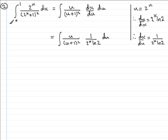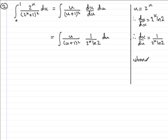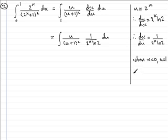Now we return to changing the limits. These limits 0 and 1 are with respect to x. When x equals 0, u equals 2 to the power 0, and 2 to the power 0 is simply 1, so u equals 1. That new limit corresponds with x equals 0. For the top limit, when x equals 1, u equals 2 to the power 1, so u equals 2. So we are now going from 1 to 2 in terms of u.